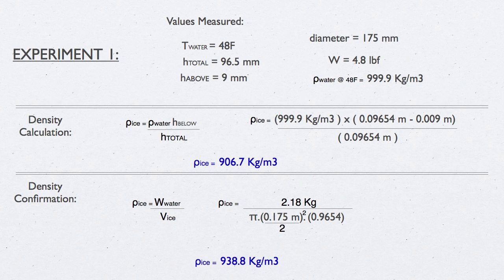Notice you have some unit conversions to handle. We converted to the SI system after the measurements were taken. Plug the height and density values into the formula we derived for density of the ice. We arrived at density of ice equal to 906.7 kilograms per meter cubed.